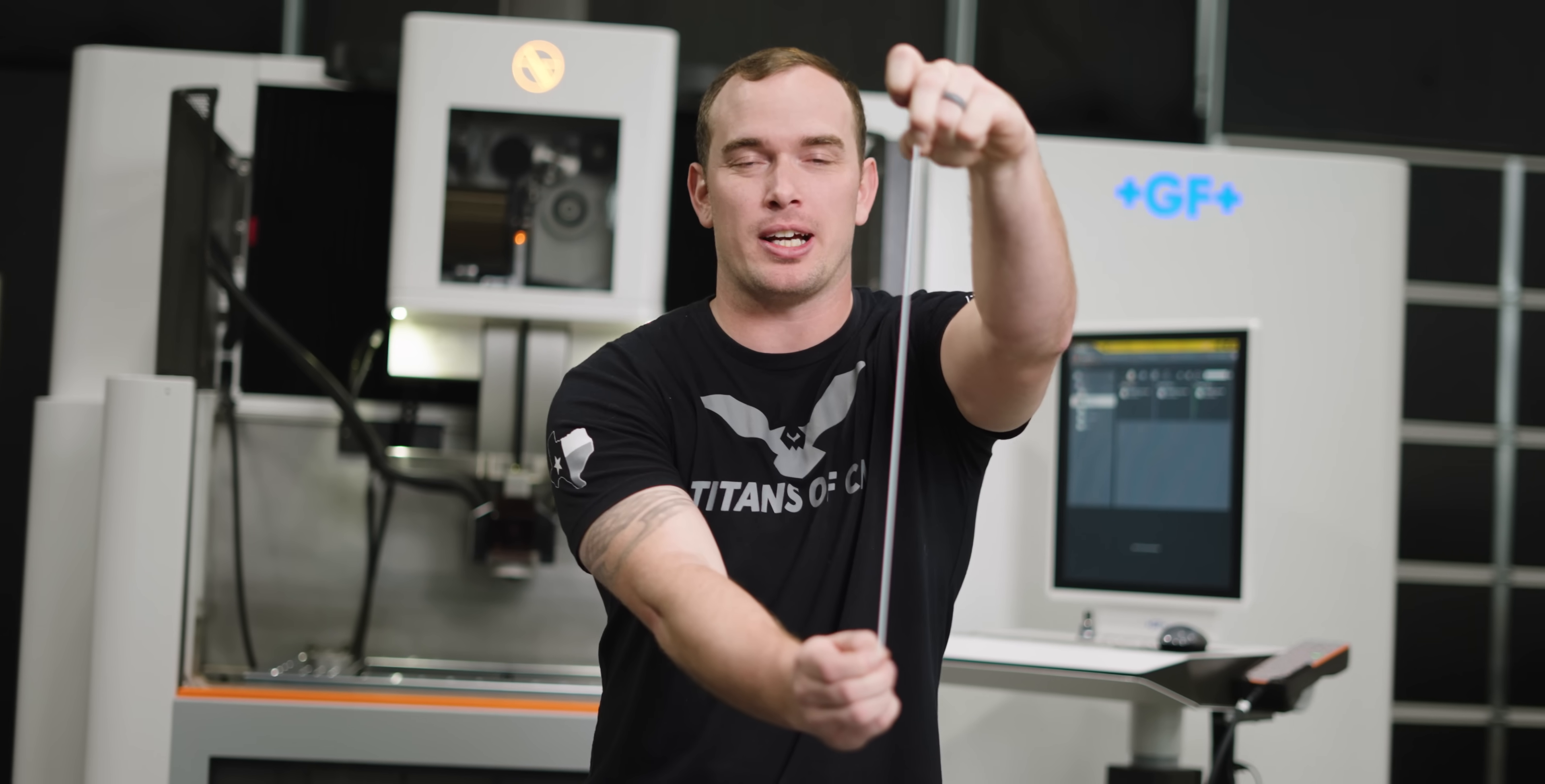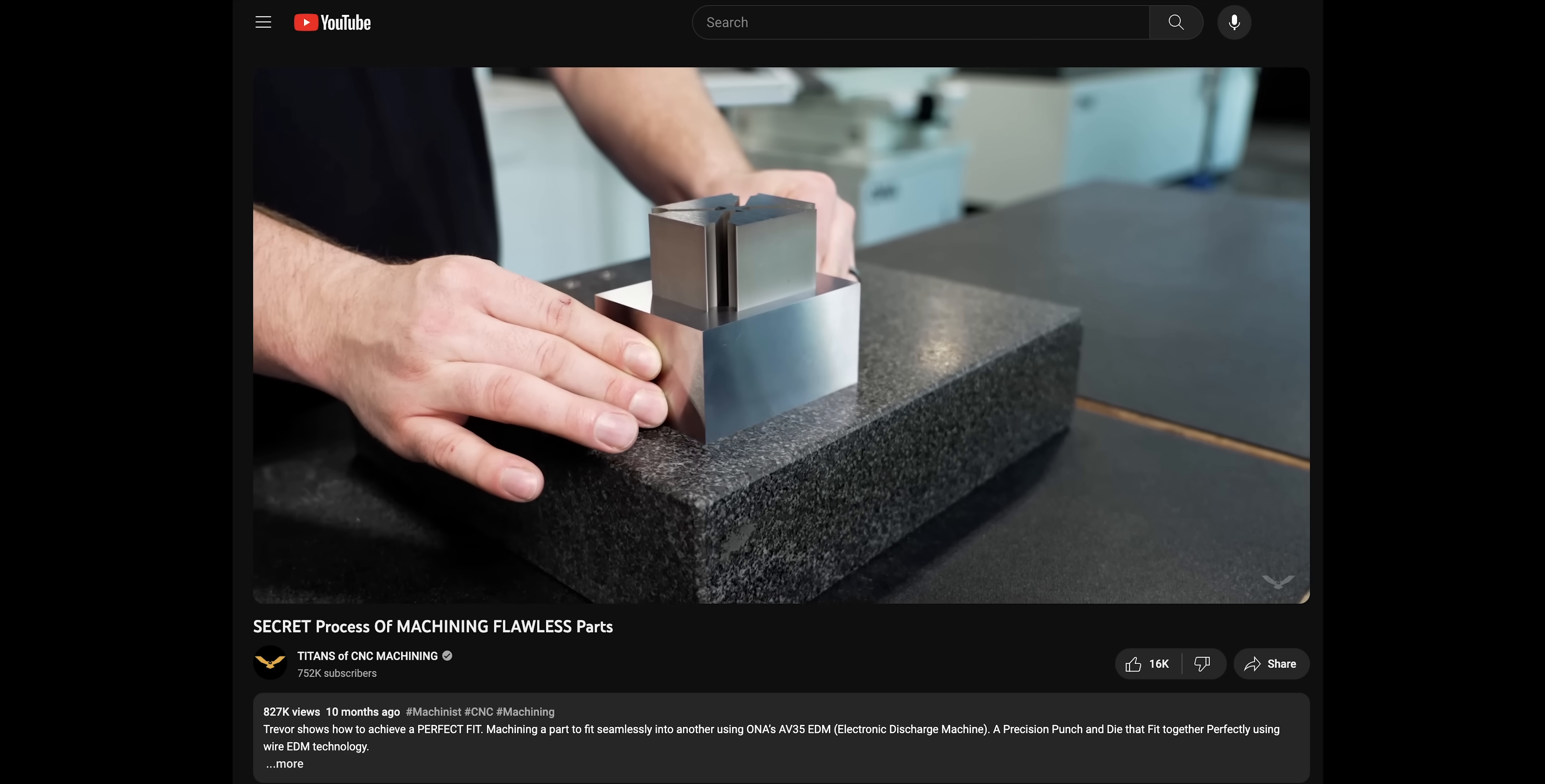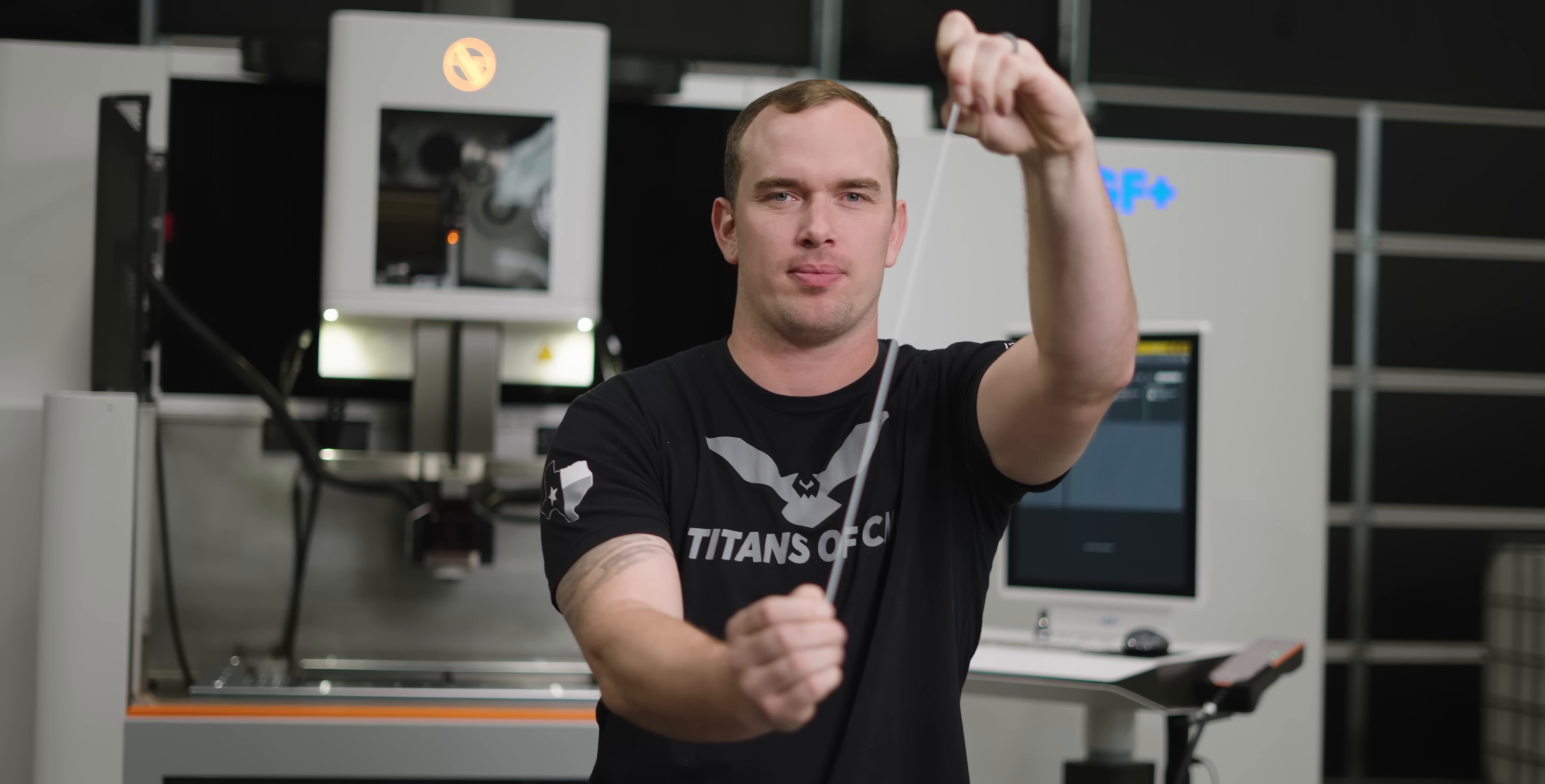The reason we're able to cut tapers on our wire EDM is because our upper head and our lower head actually move independently from one another. In a previous video I did a seamless fit with just a 2D contour and a straight wire. In this case we're doing a 20 degree taper and in future videos we're actually going to be doing varying tapers.